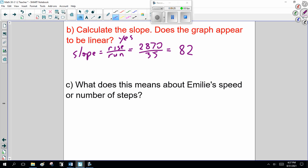So what does this mean about Emily's speed or number of steps? Well to be more specific, this is 82 steps a minute. I should include my units. And I didn't do it up here which is wrong. I really should have my units up here. That's a boo-boo on my part. Because the rise is steps and the run is time or minutes. All right? So that's what I need to be able to do.